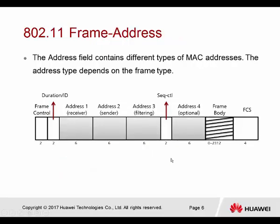The address field contains different types of MAC addresses. This is why they have 6 bytes, since our MAC address also uses 6 bytes. The address type depends on the frame type — what kind of frame we are currently receiving.